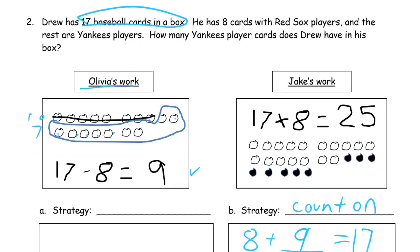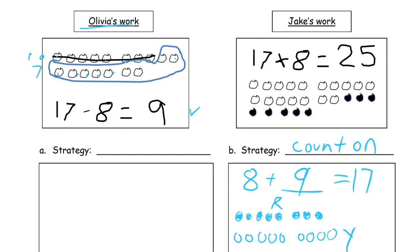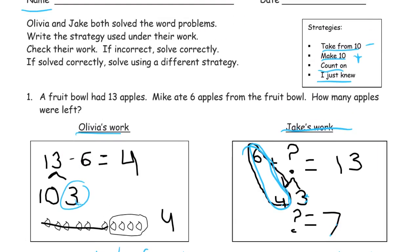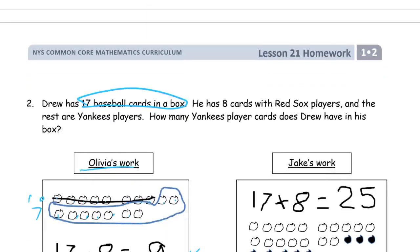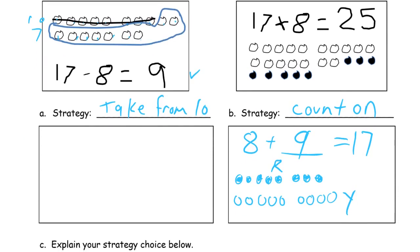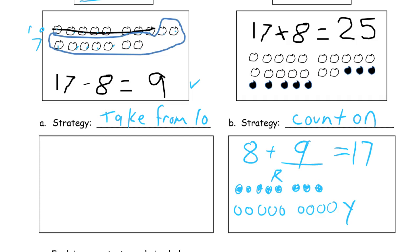Now let's fix Olivia's. Let's look at Olivia's. Since she got it right, we've got to figure out a different way for her to do it. So she's subtracting. We're going to take from 10. Right? Because that's one of the strategies from the first page. We can take from 10, make 10 as an addition strategy. We're not doing that. Count on her. I just knew she, it looks as she counted on with pictures. We're going to take from 10 using number bonds. So if we're going to do 17 minus 8 equals something.